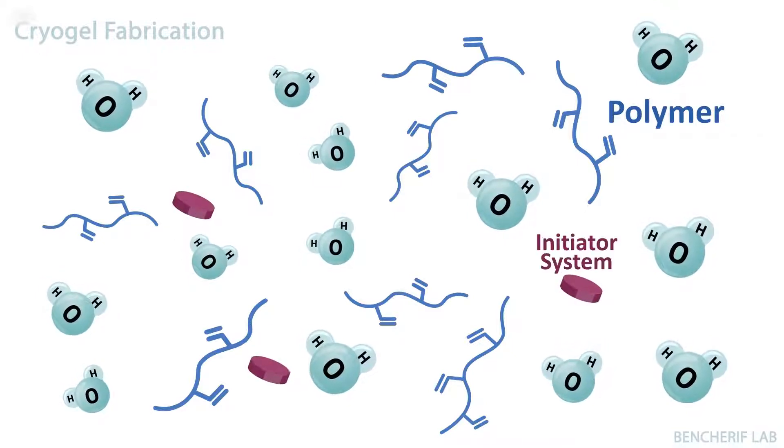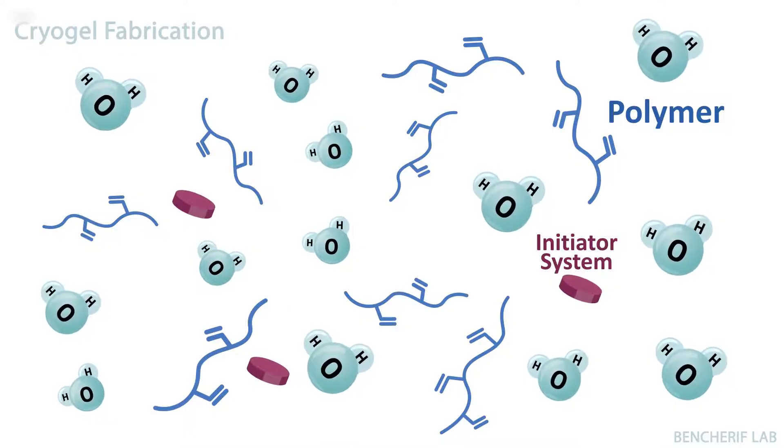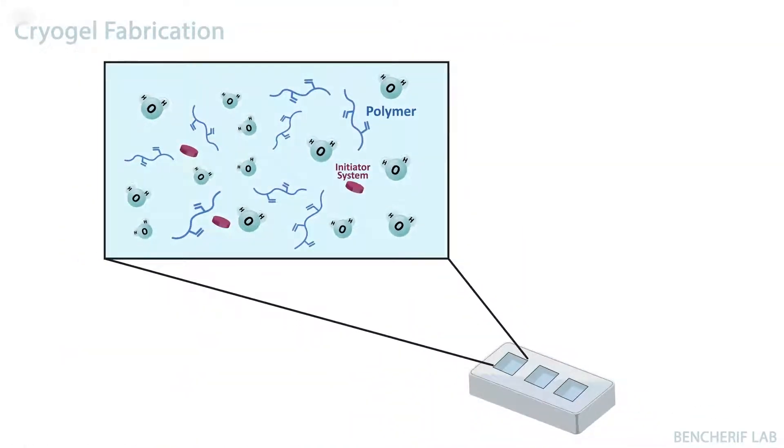Next, an initiator is added to the polymer solution which starts the reaction. Before the cross-linking occurs, the polymer mixture is transferred into a pre-shaped mold.